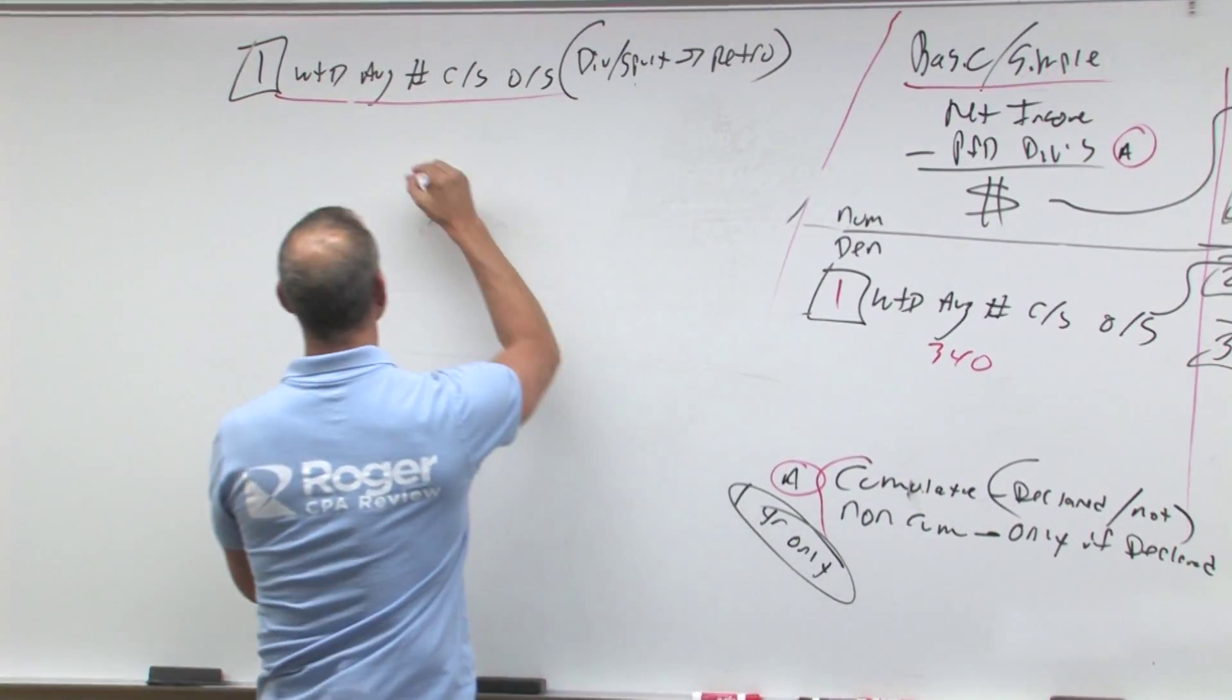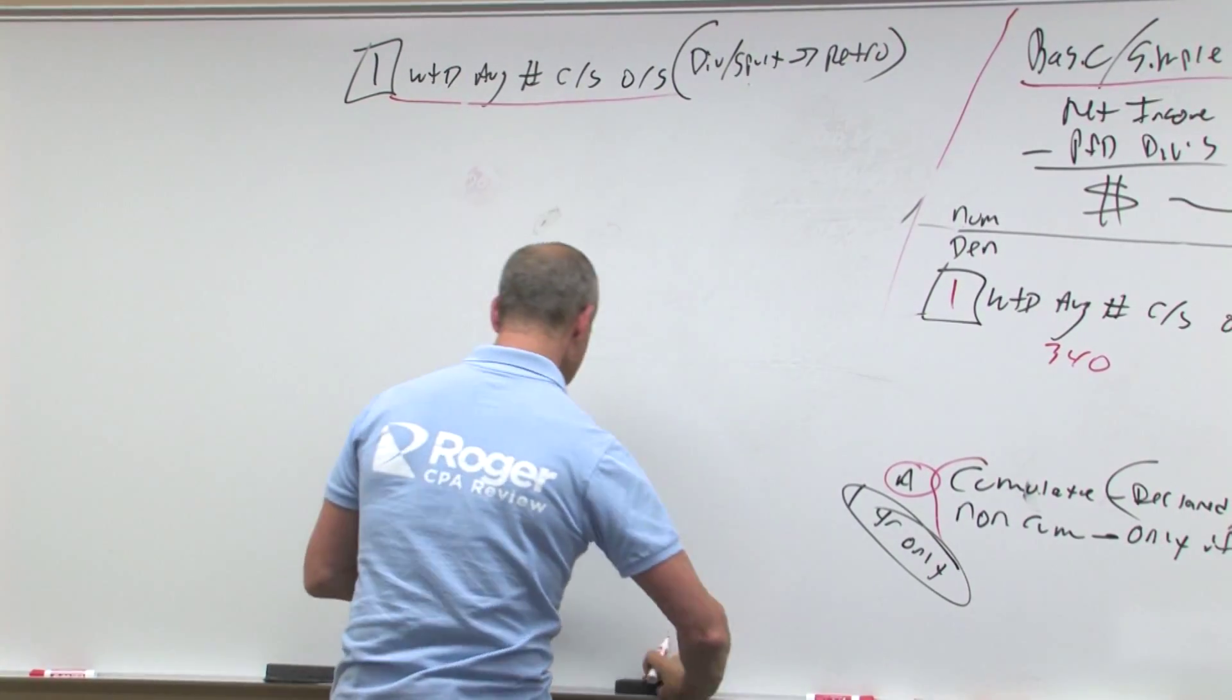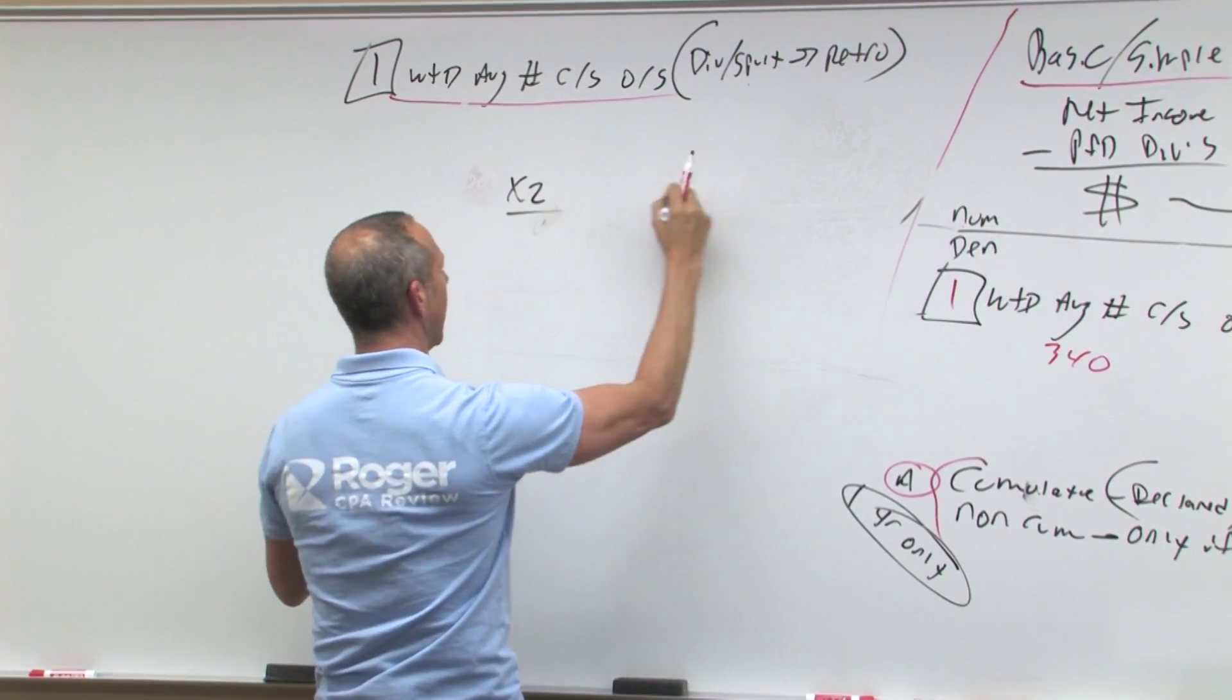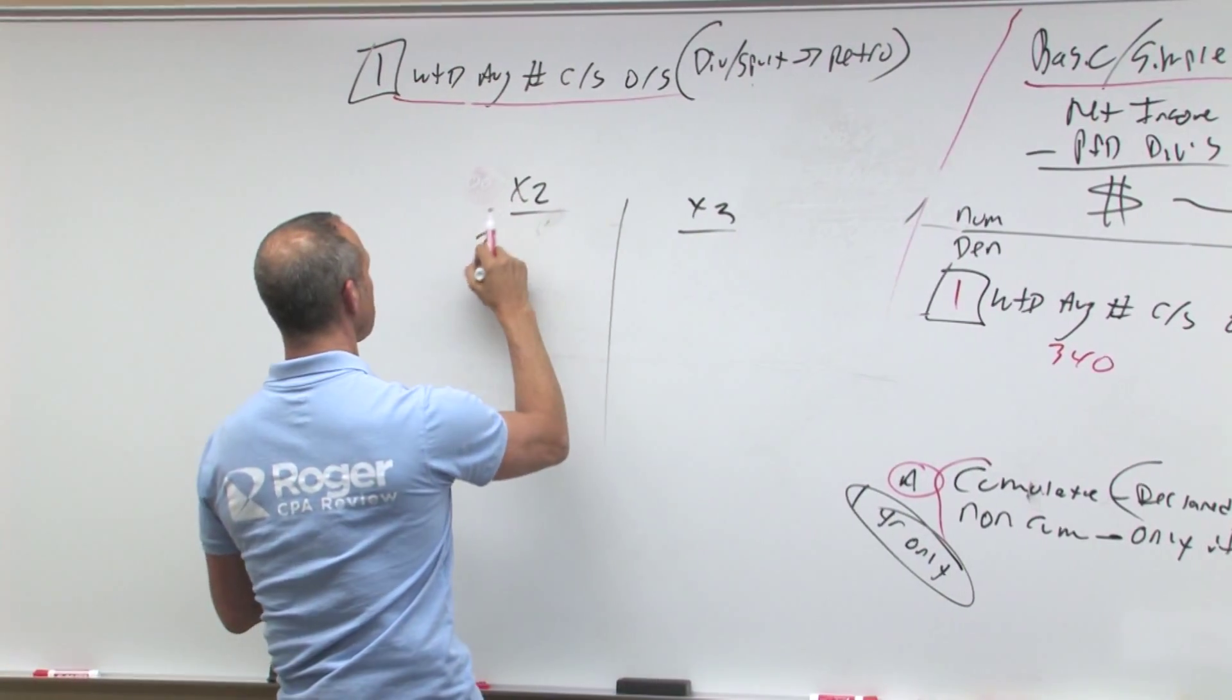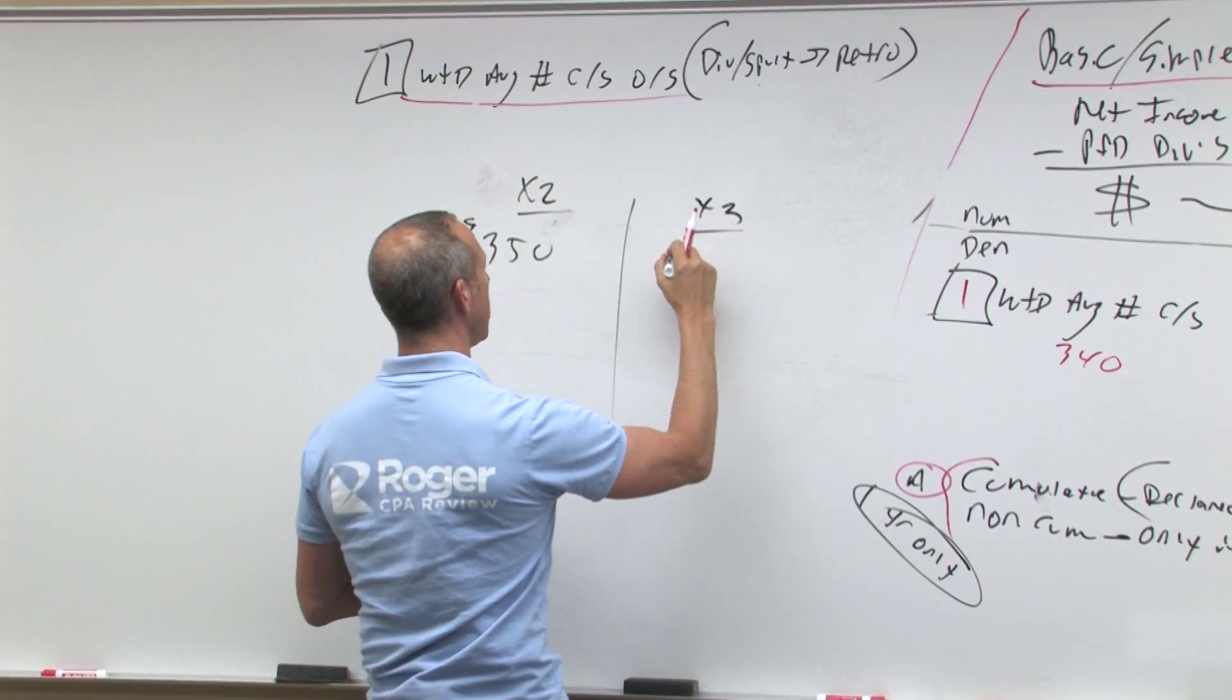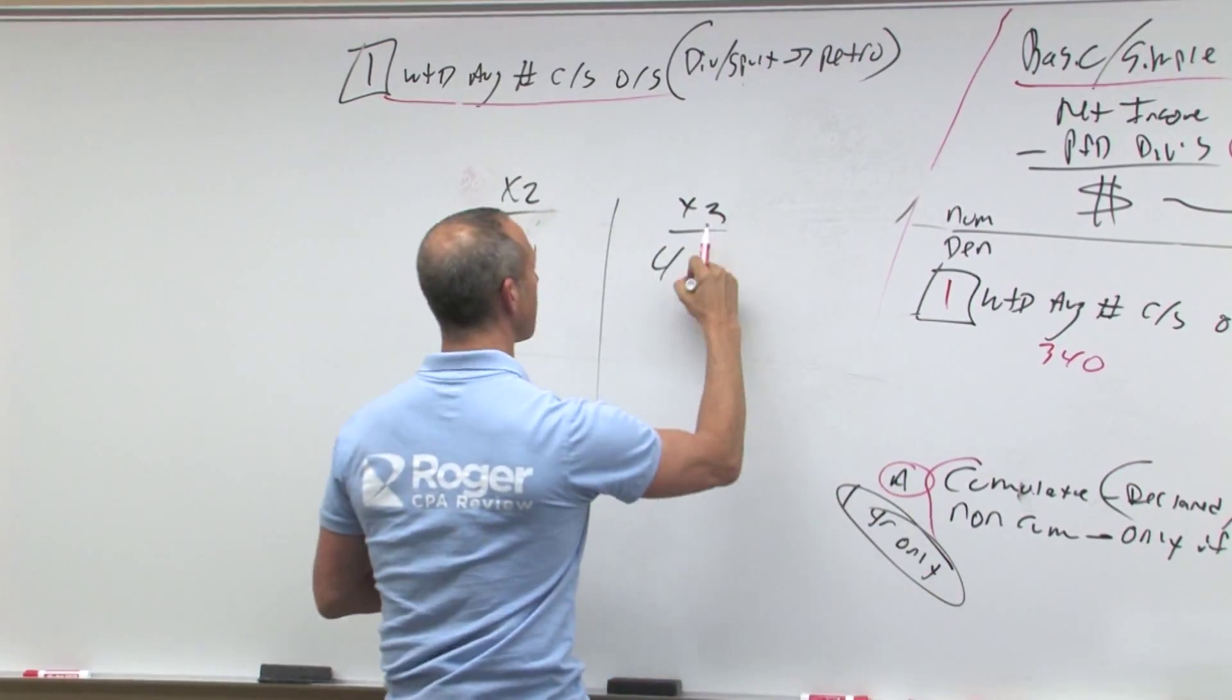So we've got X2 and X3. X2, boom. X3, boom. We have net income for X2 was 350. Net income for X3 was 410.